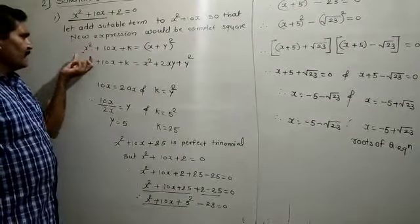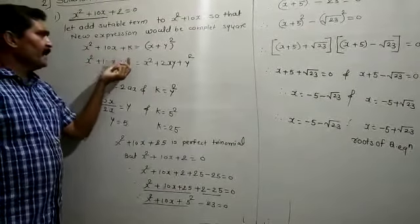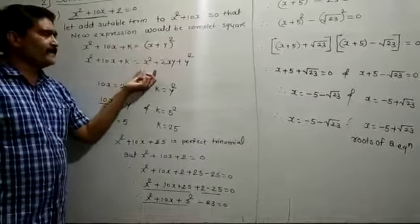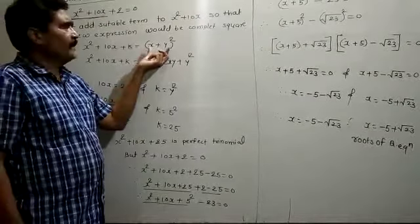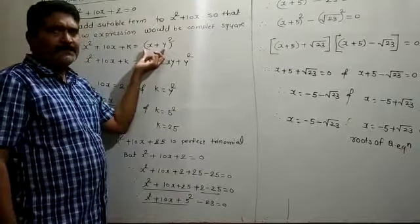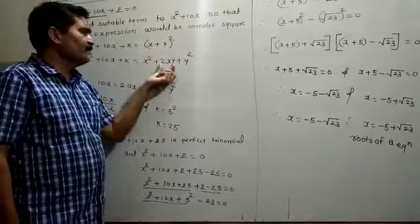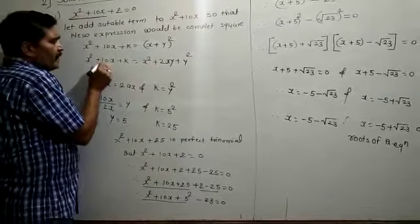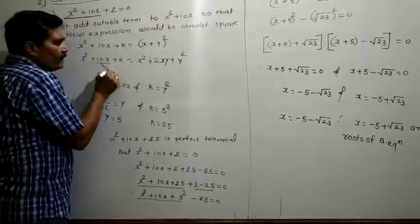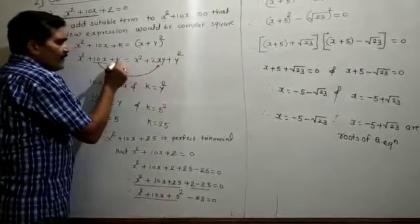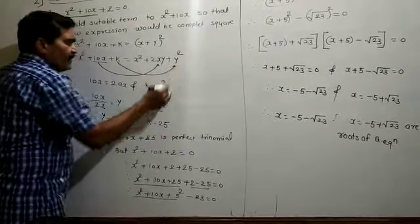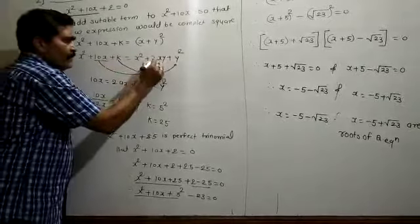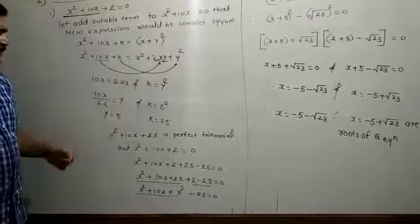Write x squared plus 10x plus k, then expand (x + y) squared using the identity: x squared plus 2xy plus y squared. Now compare 10x with 2xy, and compare k with y squared. So we get: 10x equals 2xy and k equals y squared.